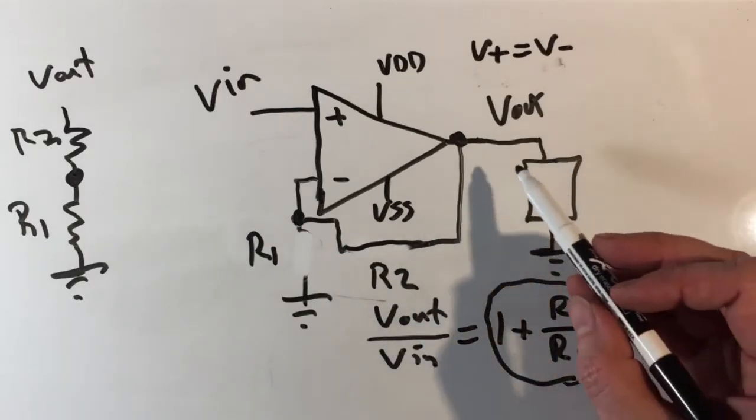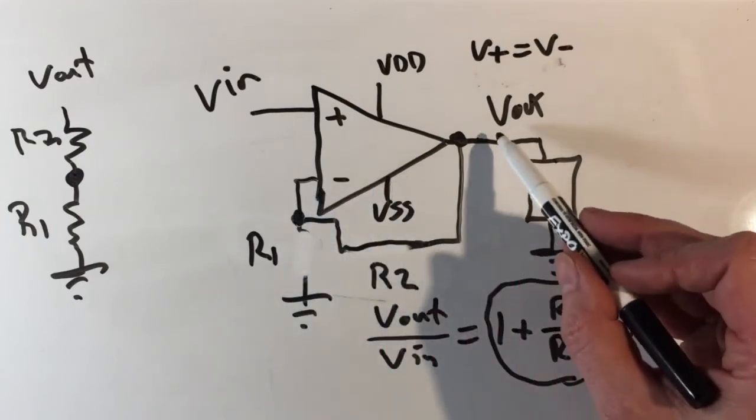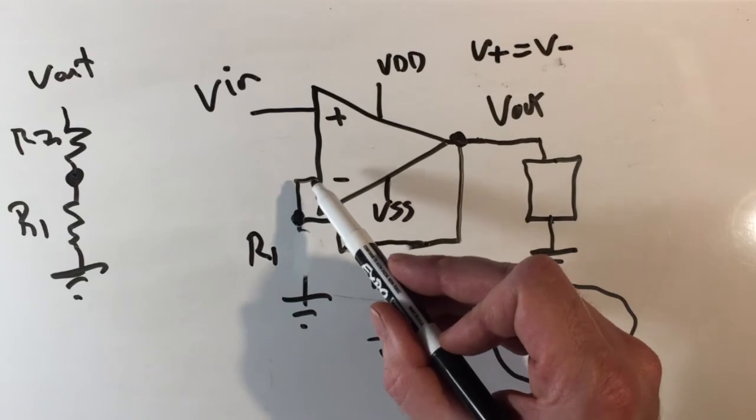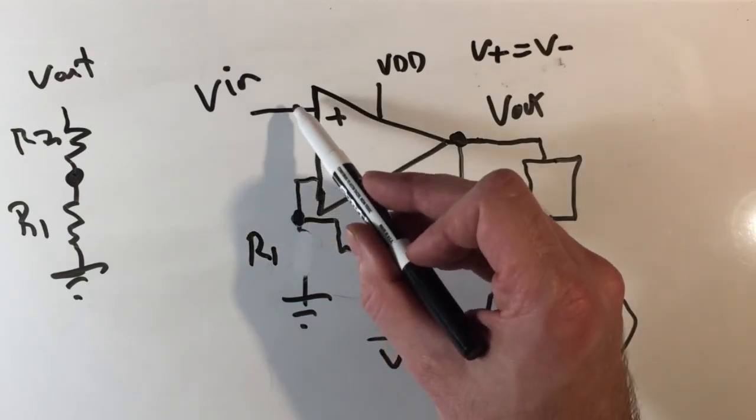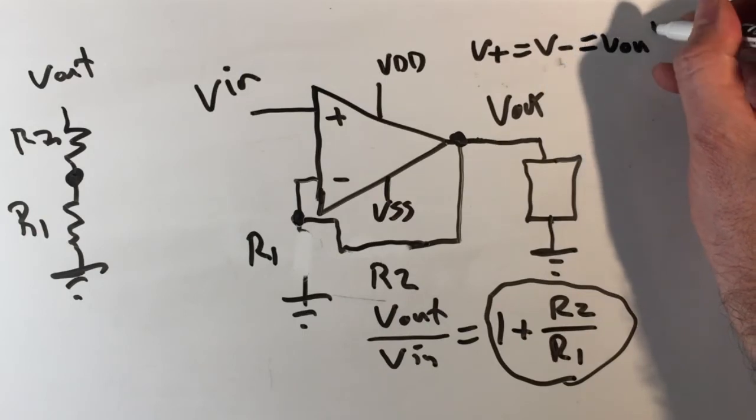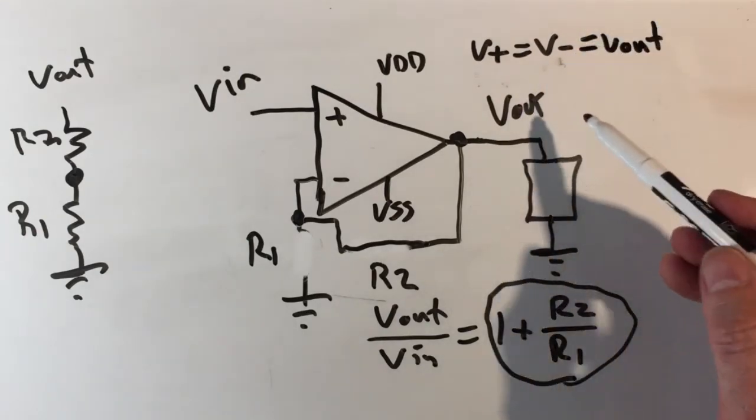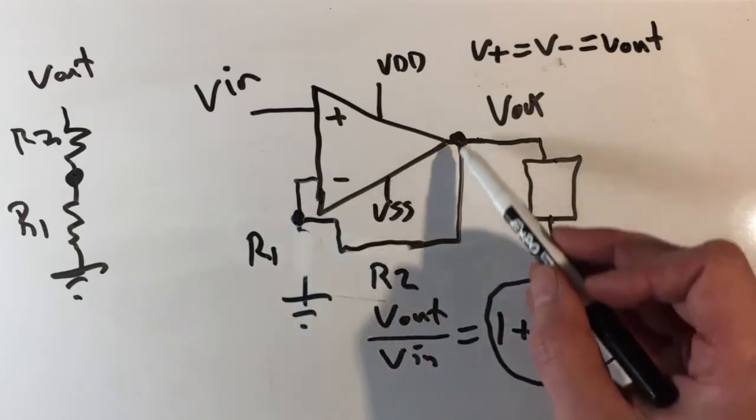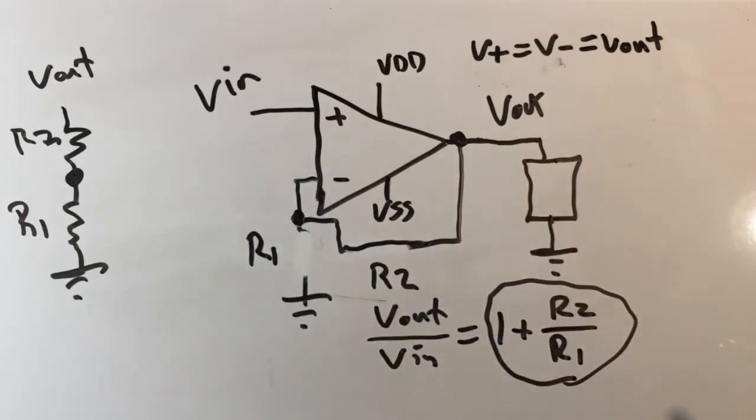Just looking at the circuit, V out is the same as the V minus terminal, and the V minus terminal has to be the same as the V in terminal. So they're all equal. That is really how you can analyze a follower, which is probably the simplest closed loop negative feedback amplifier.